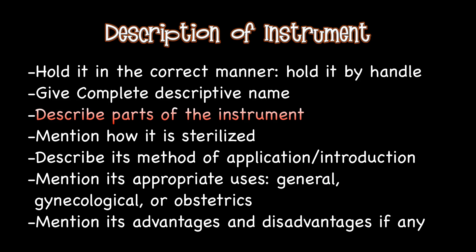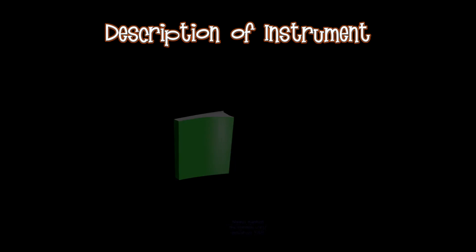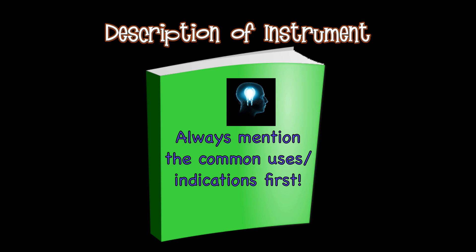Mention how it is sterilized before use. Describe its method of application or introduction, if any. Lastly, mention its uses appropriate to the examination table one is giving viva for. For example, on the gynecological table, mention only general and gynecological uses. And on the obstetrics table, mention only general and obstetrics uses. Mention its advantages and disadvantages, if any, especially when there are other similar instruments — compare them. I would like to mention one more important point here: always mention the common uses or indications first.